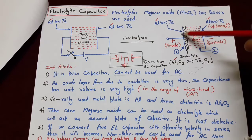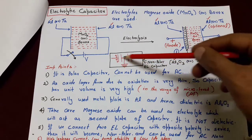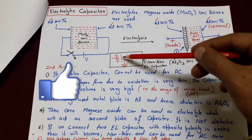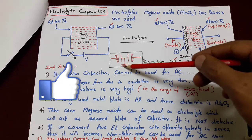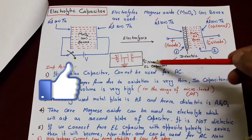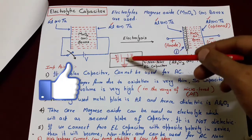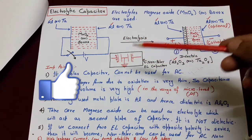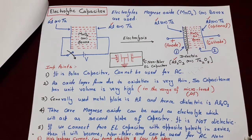Ek cheez aur: agar hum do electrolytic capacitors jo ki nature mein polar hain unko series mein jod den jis se ki unki opposite polarity ki plate aapas mein connect ho jaye, aur yahan se is terminal ko agar hum ground kar den, to ek polar capacitor ko is arrangement se hum non-polar electrolytic capacitor mein convert kar sakte hain. Aur ab yeh non-polar electrolytic capacitor ban chuka hai, isliye isko hum AC ke liye bhi use kar sakte hain.